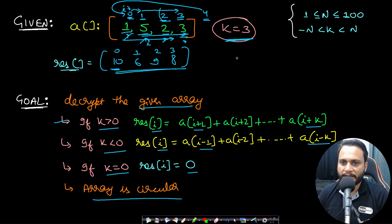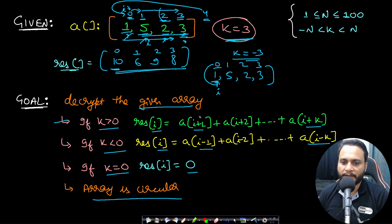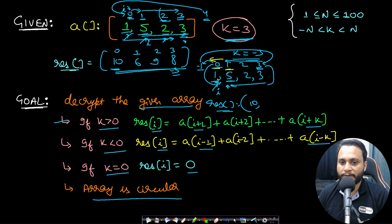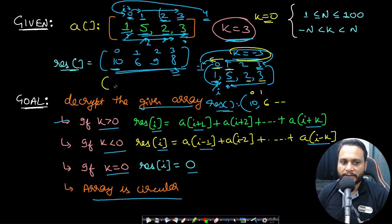If k equals -3, given array [1, 5, 2, 3], starting at index 0 we look to the left from -1 to -3. Since index -1 doesn't exist, we cycle back to index 3, then 2. So we add indices 3, 2, and the wrapped value: 3 plus 2 plus 5, which is 10. For index 1, we move left to index 0, index 3 (wrapped), and index 2, adding 1 plus 3 plus 2 equals 6. If k is 0, the resultant array would be all zeros.